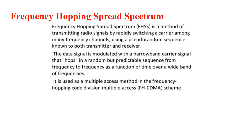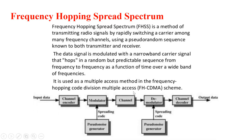Frequency hopping spread spectrum is a method of transmitting radio signals by rapidly switching a carrier among many frequency channels using a pseudo-random sequence known both to the transmitter and receiver. The data signal is modulated with a narrow band carrier signal that hops in a random but predictable sequence from frequency to frequency as a function of time over a wide band of frequencies. It is used as a multiple access method in the frequency hopping code division multiple access scheme.